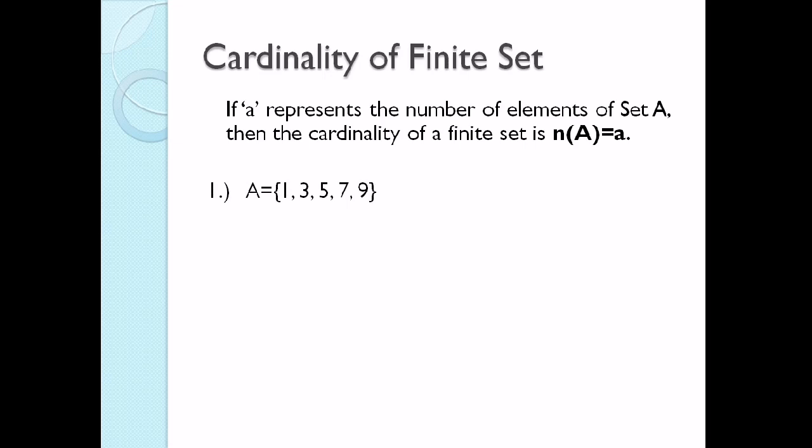Let's get the cardinality of our 3 examples. Set A is {1, 3, 5, 7, 9}. All the members or elements are already listed, so we just count — the number of elements of A is 5.